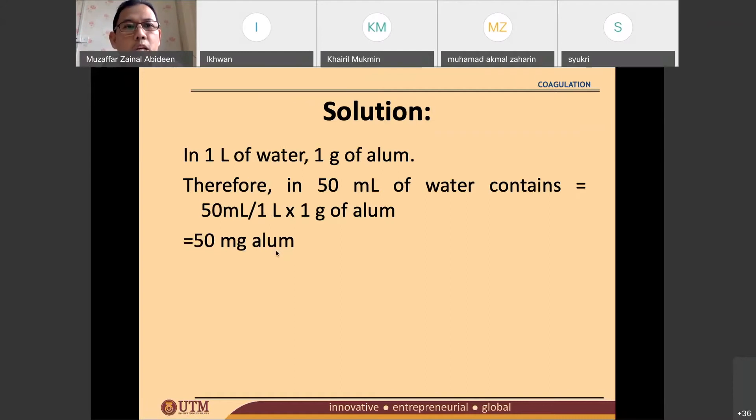So 50 mg per liter of alum is being transferred into 2 liters of jar test. So we would like to know the optimum dosage. So the optimum dosage is 50 mg of alum. I know that this is a very small picture. But remember, this one is 50 mg. So that one is 50 mg being added in 2 liters. And that's why you have 50 mg divided by 2 liters. So this is the optimum dosage, 25 mg per liter.